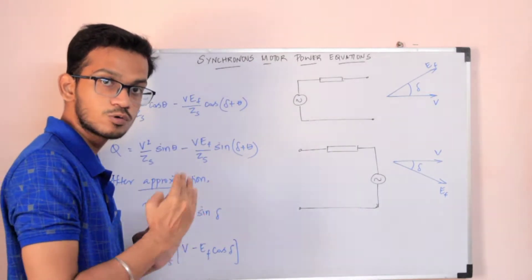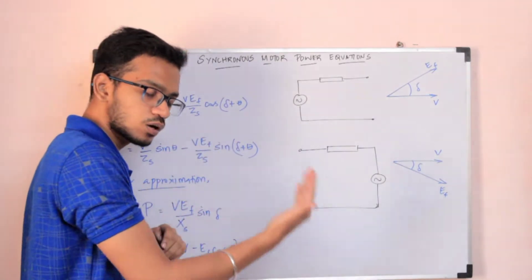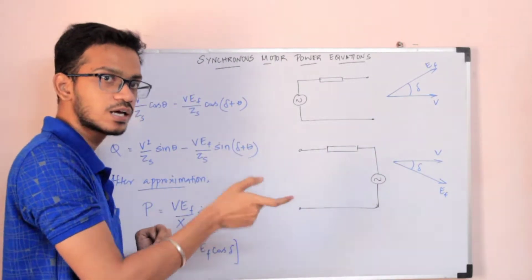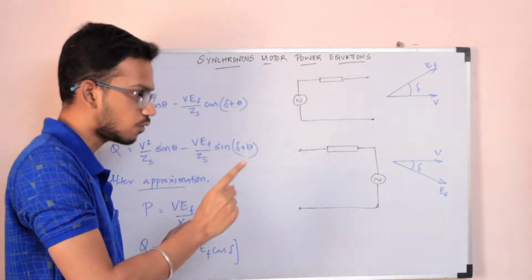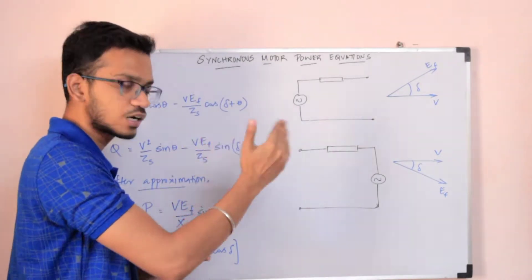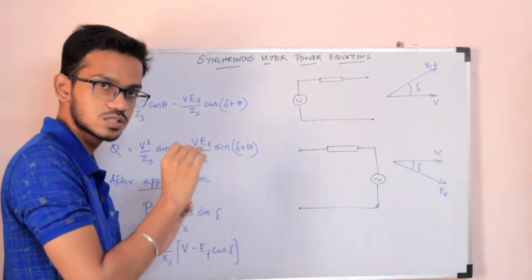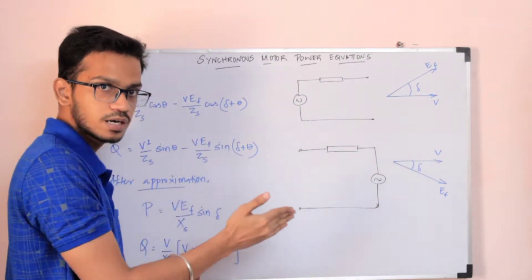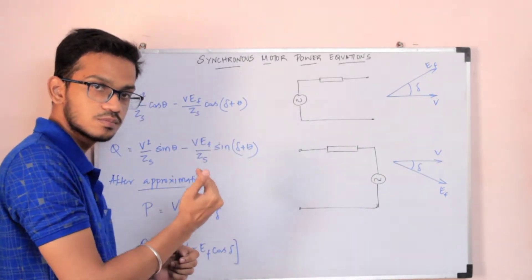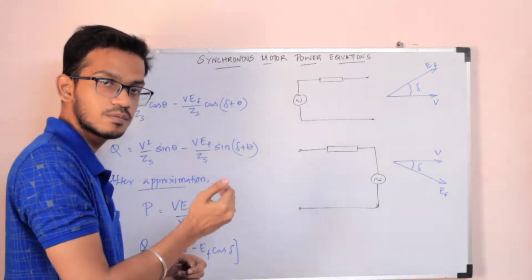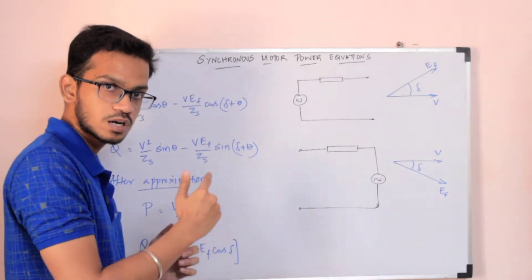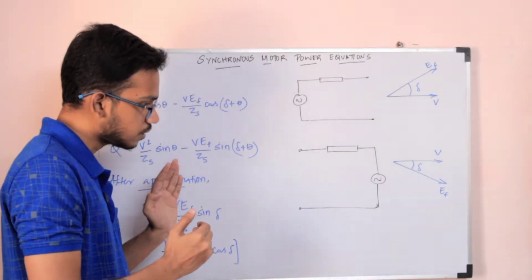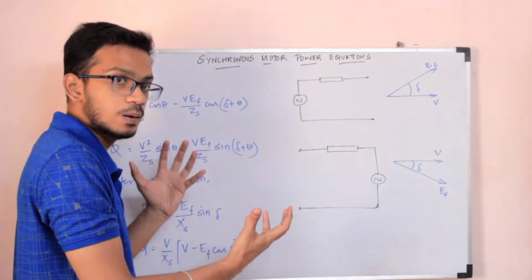Generators are on the output side, where there are electrical parameters — real power and reactive power. This is a discussion from the electrical engineer's perspective. On the motor side, the input side has real power and reactive power, which the motor absorbs.